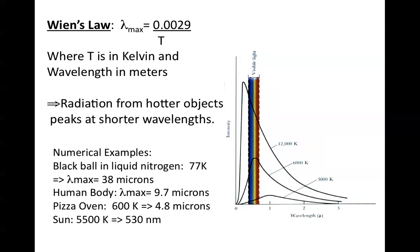So let's give a few examples. If we took a black ball and dipped it in liquid nitrogen, it would have a temperature of 77 degrees above absolute zero, and its maximum wavelength, the wavelength of its peak, would be 38 microns, about 70 times the wavelength of visible light.